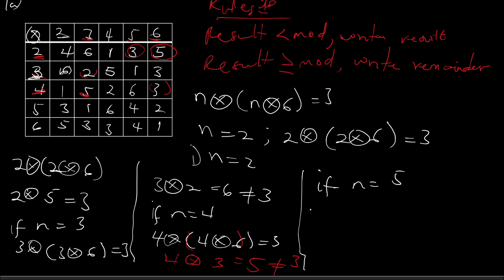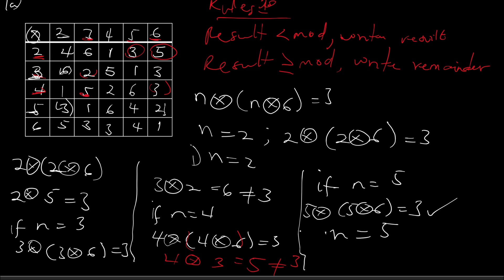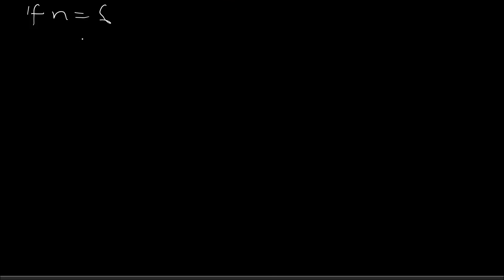Now if n equals five, we are saying five times (five times six) should equal three. From the table, five times six equals two, and then five times two equals three. This is equal to three, so n equals five is our second solution.